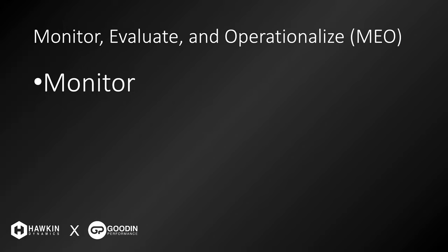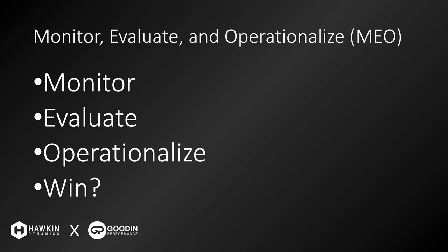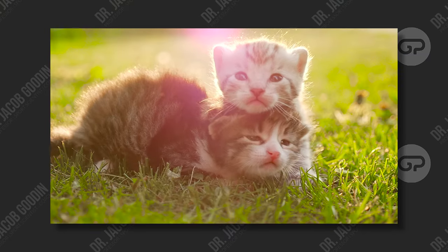This is where the MEO process comes into play, structured in that order specifically. First, we monitor — we gather data, we quantify, we measure. Then we evaluate it. We employ statistics, often simple ones, to make a meaningful evaluation of those numbers so we know what they mean: are they positive, negative, or neutral? What do they mean for this athlete, for the group of athletes, for athletes over time versus in a single situation? Then we operationalize that data — we take those results, visualize them (because people understand pictures better than words and numbers), and use them to drive the training process, making those results actionable. The fourth step is to win more games — but I didn't want to put that as the official fourth step because then it's M-E-O-W, which spells meow.